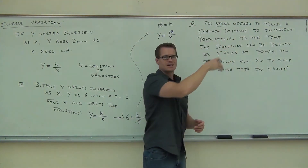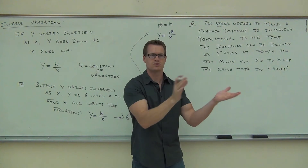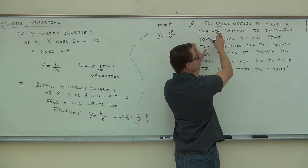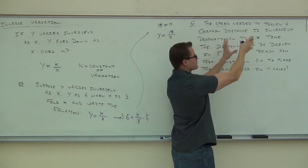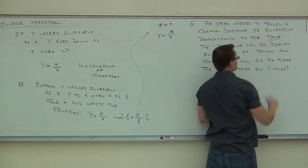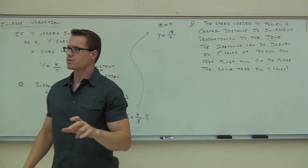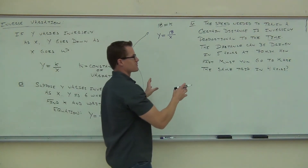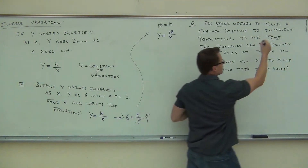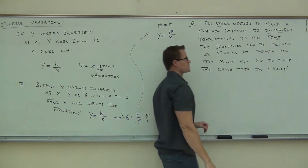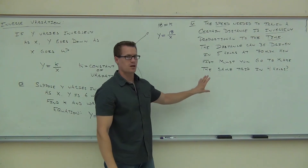We're not going to use the distance because the distance isn't changing — that was just part of the problem that says you're going a certain distance. The speed needed to travel a certain distance is inversely proportional to the time. Let's set up our equation first. So first, it either varies directly or varies inversely depending on what it says. We just talked about this as inversely. So can you tell me what equation I'm going to have? Is it K times or K over? Which one?